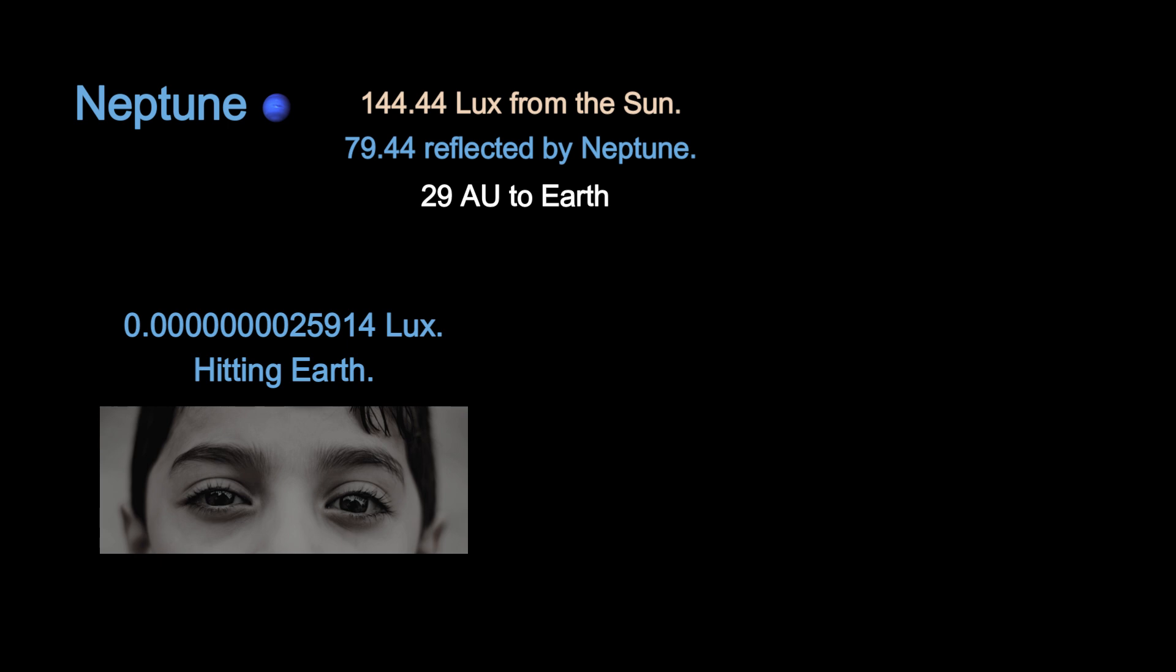To directly see Neptune, the light needs to be over 38,000 times greater. To see its blue color, nearly 4 million times. Neptune is not visible with the naked eye. You need a telescope.